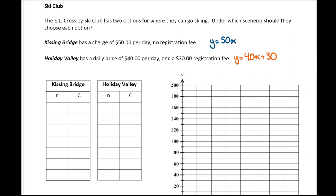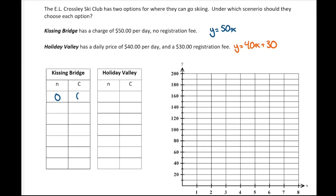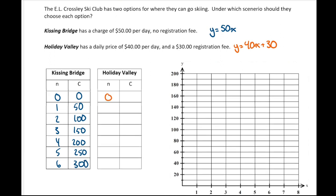Starting with a table. For Kissing Bridge: zero days is $0, one day is $50, two is $100, three is $150, four is $200, five is $250, and six is $300. For Holiday Valley: zero days still costs $30, one day is $70, two is $110, three is $150, four is $190, five is $230, and six is $270.